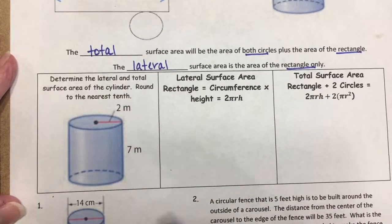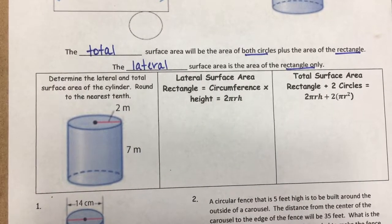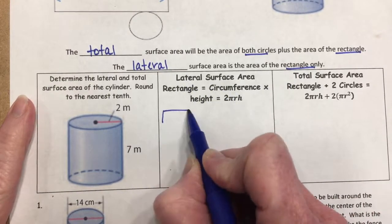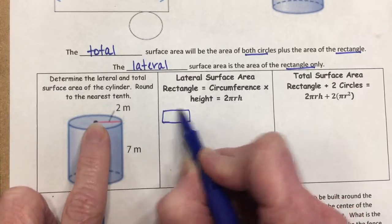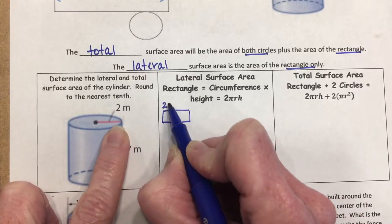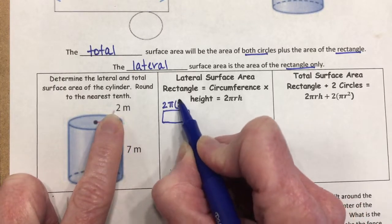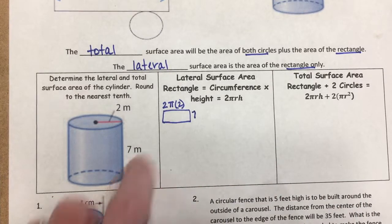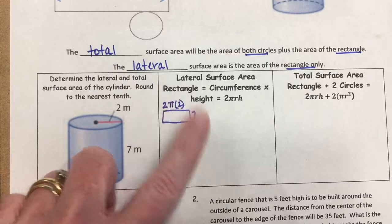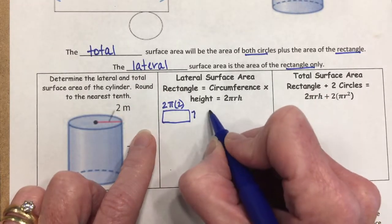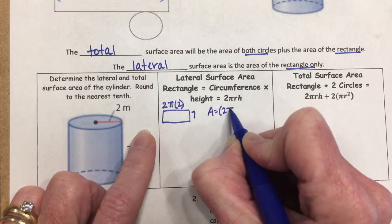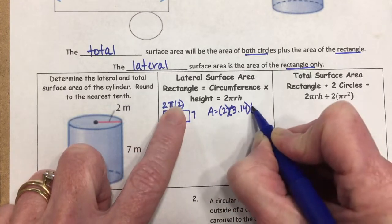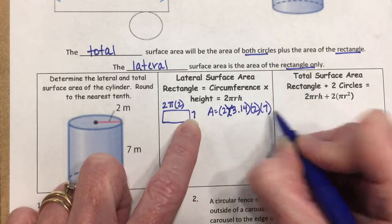Let's look at the first example: determine the lateral and total surface area of the cylinder, rounded to the nearest tenth. Lateral surface area is just the rectangle — its area equals the circumference times the height. The circumference is two times pi times the radius, which in this case is 2, and the height is 7.